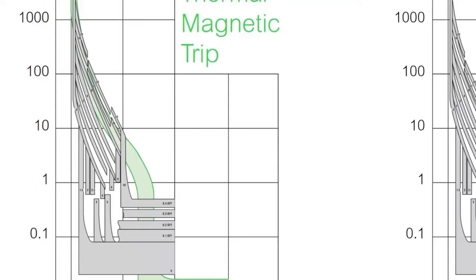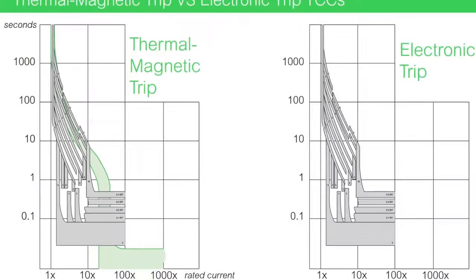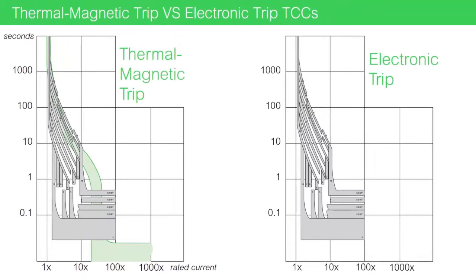Again, these electronic trip responses are only available on the molded case and insulated case circuit breakers. This time-current curve is for one of our insulated case master-packed circuit breakers.